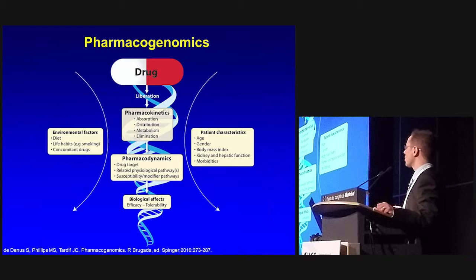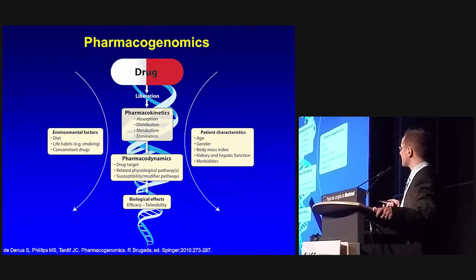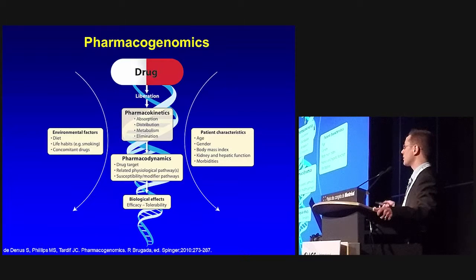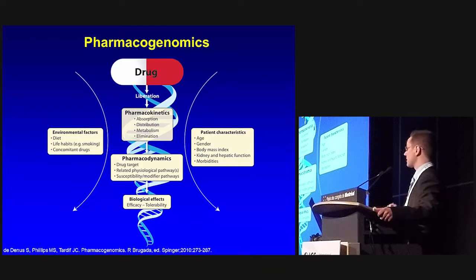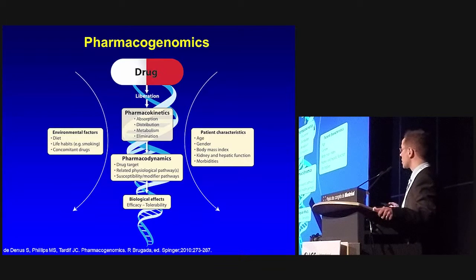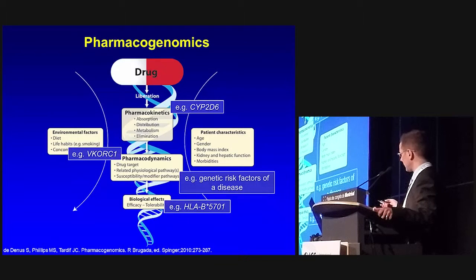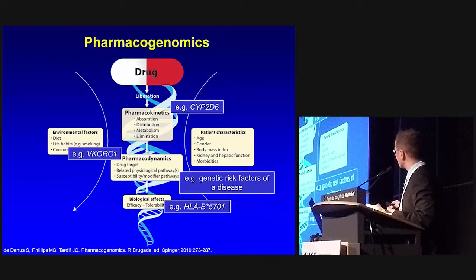Pharmacogenomics is an example of complex genetics, which means that the traits we observe — such as drug efficacy or allergic reaction — are generally the combination of multiple genetic factors and environmental factors. As environmental factors, we can think about diet or life habits such as smoking. In regards to genetics, they can be related to the multiple components of drug response.